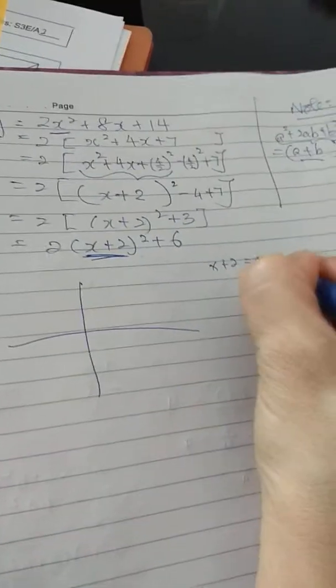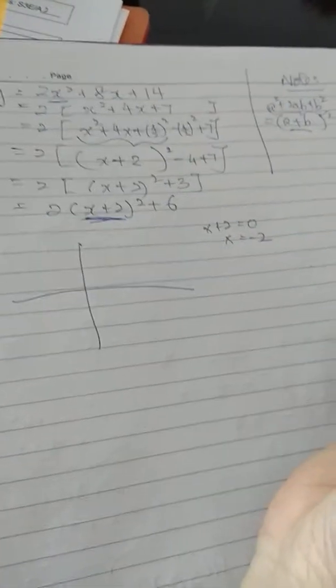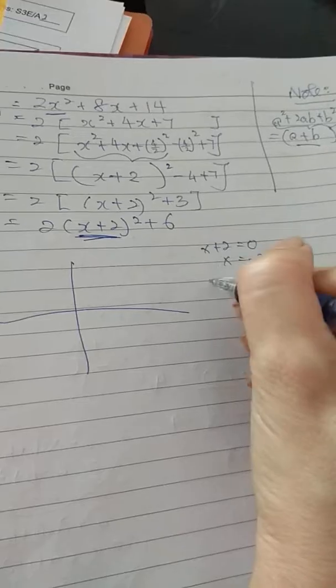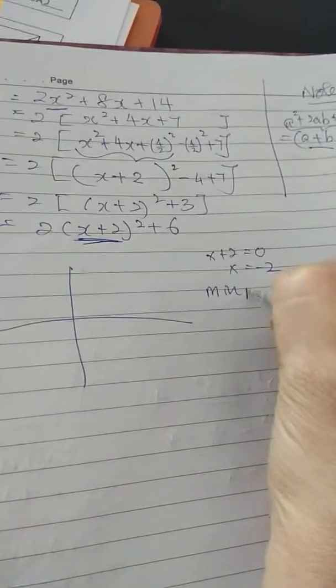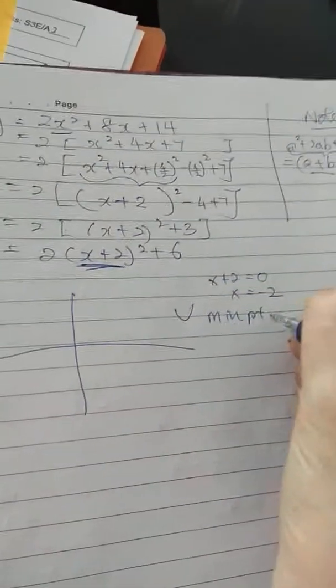From here, you equate to 0. x equals minus 2, this is the line of symmetry. Because this is a happy face shape, it's a minimum point.